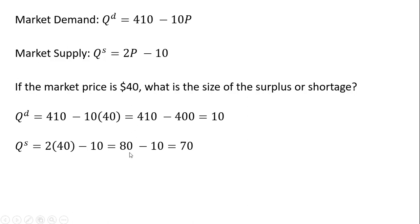Plugging that $40 into the market supply, market supply curve slopes upwards. So here we see sellers would like to bring 70 units to the market. So here we have a surplus.